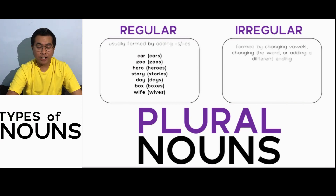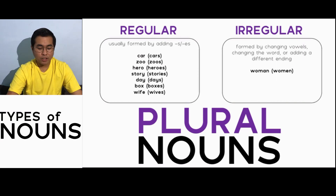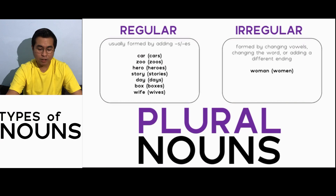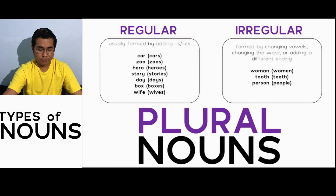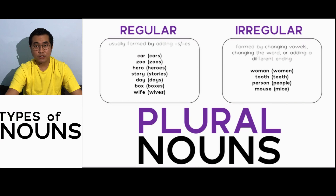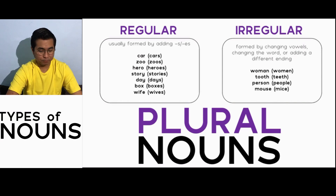For irregular plural nouns, they are formed by changing vowels, changing the word, or adding a different ending — you cannot simply add s. You usually change the spelling or some parts of the word. For example, woman becomes women, tooth becomes teeth, person becomes people, mouse becomes mice, and child becomes children. For irregular plurals, they are not your usual adding of s or es — you just have to change the spelling, change some letters, or the word itself.